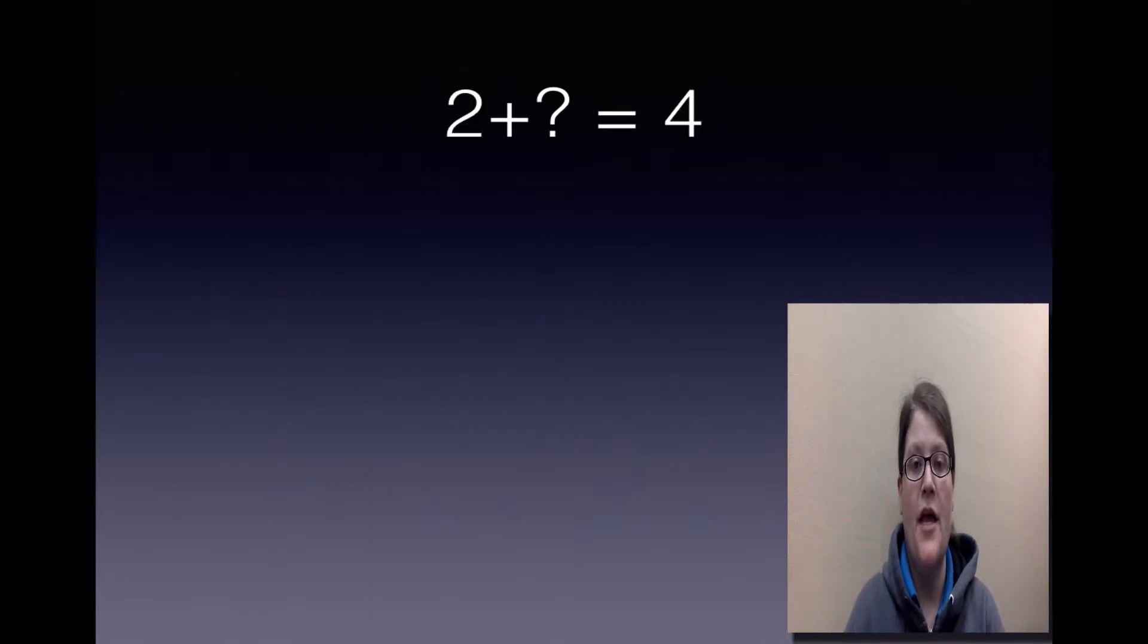Let's try again. 2 + ? = 4. We're going to start with the addend we know, and we're going to count on. We're going to count on, and we'll stop when we get to 4, the sum. So 2, 3, 4.